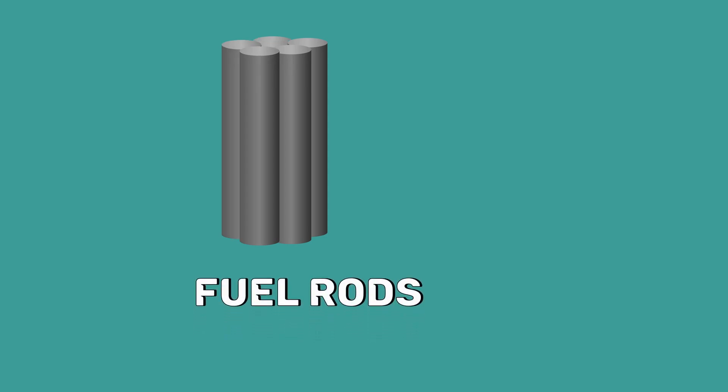Uranium-235 is highly radioactive. In order to eliminate the radiation hazards, the fuel element is loaded into long tubes. Several tubes are arranged in a bundle, which is ready to be used in a nuclear reactor.